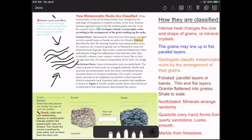Not necessarily straight, but they're in layers and they're flat parallel layers. They're thin and flat. Granite flattens into gneiss. Shale to slate. So granite can change into gneiss, and when it changes into gneiss, it's got nice flat layers. Shale can change into slate and slate will have nice flat layers.